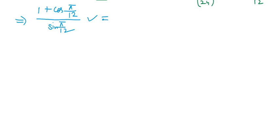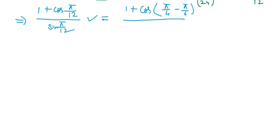This step may be written using 1 + cos. cos(π/12) may be written as cos(π/4 − π/6). In the denominator, apply the same procedure, finding sin(π/4 − π/6).